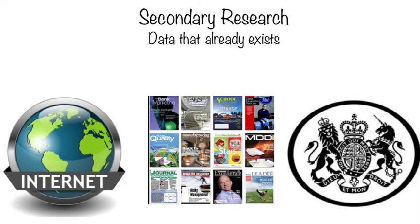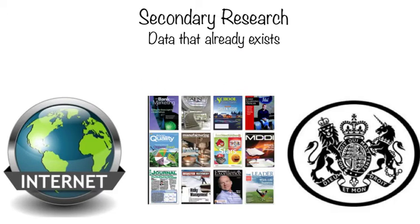There are two main categories of research. The first is secondary research, which is data that already exists — somebody else has collected it and you are the second recipient. Examples of secondary research include information on the internet, such as marketing reports. Most of the time you do have to pay a small fee. A very popular marketing information website is Mintel. Another form of secondary research is trade magazines, which are specific magazines about different industries that give you a good scope of what's currently happening in that industry.